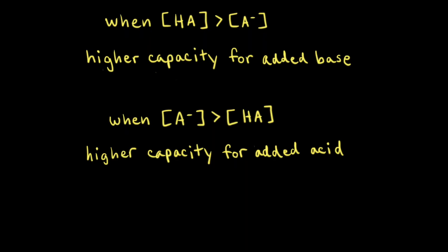We just looked at two buffer solutions in which the concentrations of weak acid and conjugate base were equal. However, a buffer solution doesn't have to start with equal concentrations. When the concentration of weak acid is greater than the concentration of conjugate base, the buffer has a higher capacity for added base than added acid. And when the concentration of conjugate base is greater than the concentration of weak acid, the buffer has a higher capacity for added acid than added base.